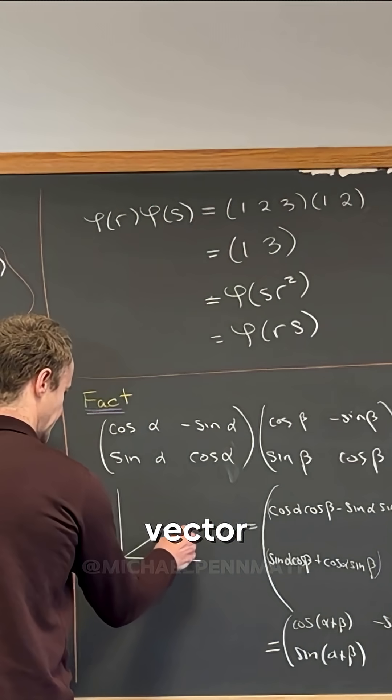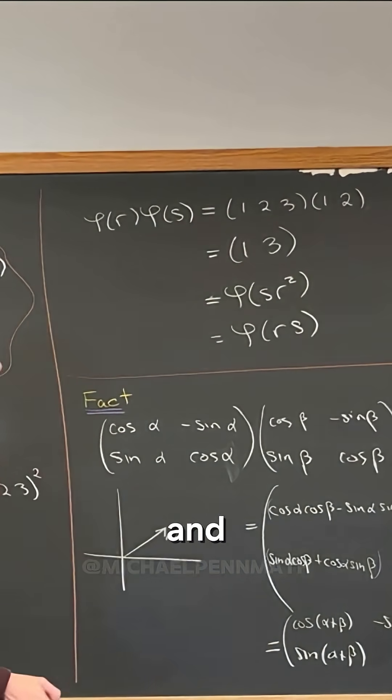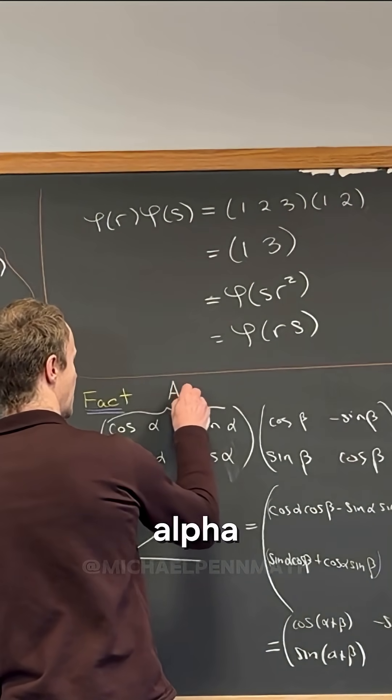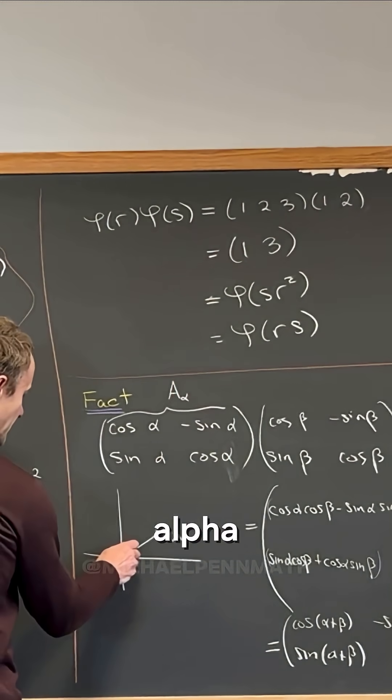Let's say this were a vector v, right, and let's say, let's maybe say that this is the matrix we'll call A_alpha. Then A_alpha v...